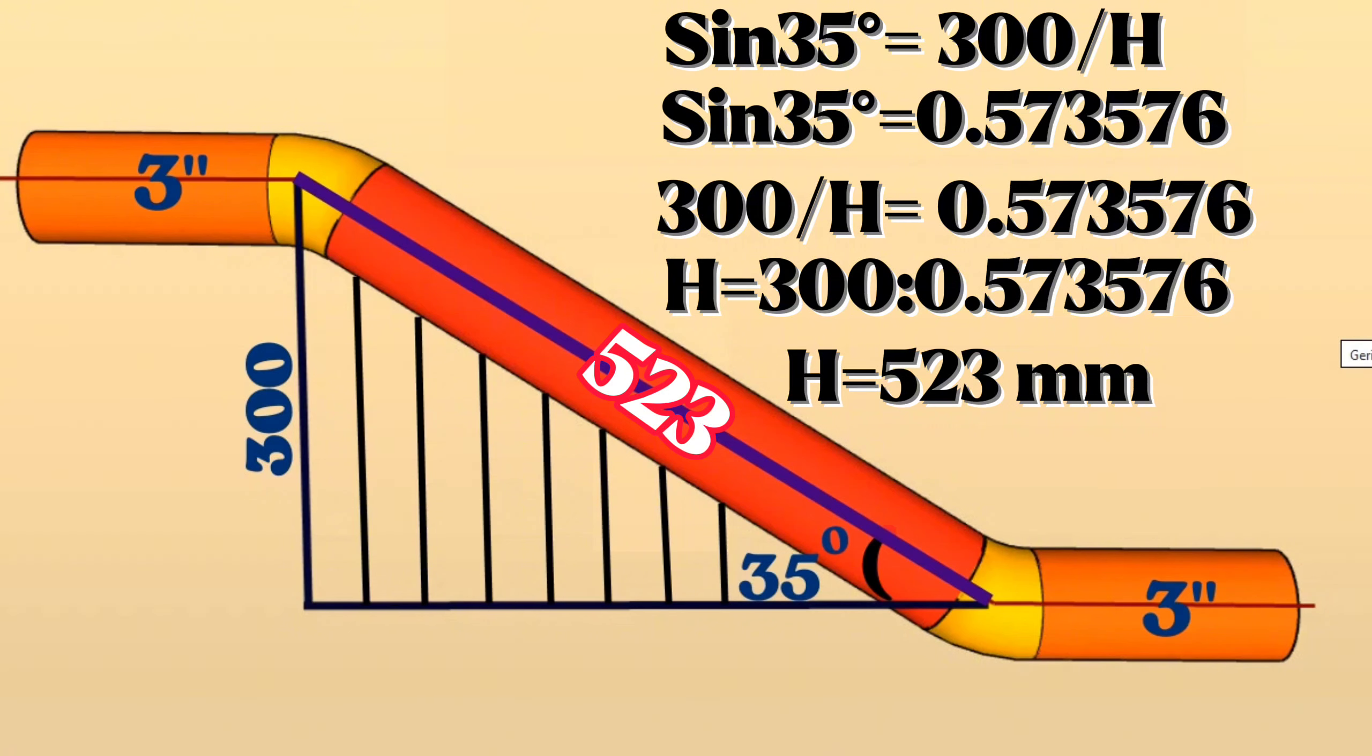If we subtract the lengths of the elbows and the gaps for welding from this total length, we can find the length of the red pipe section.